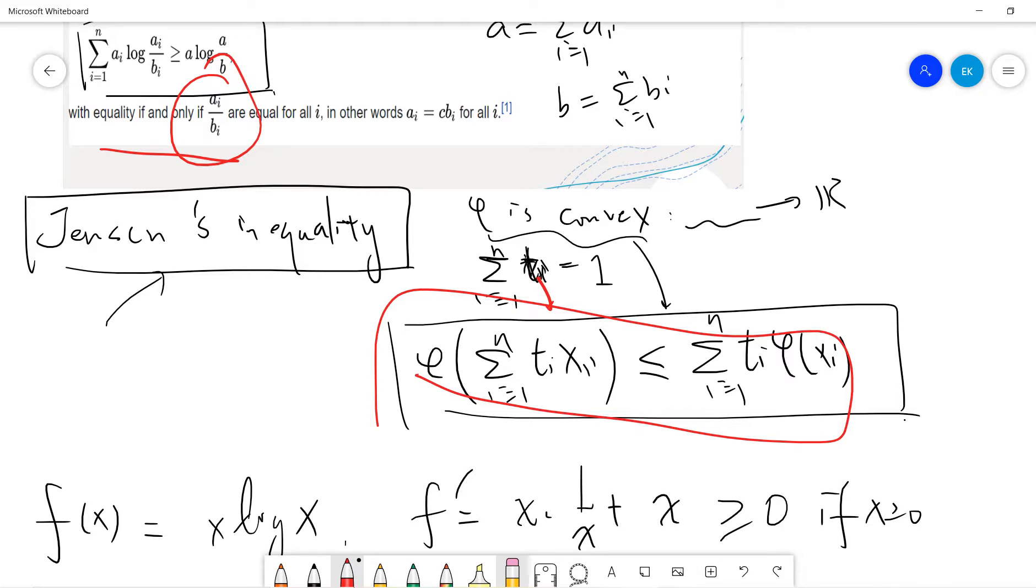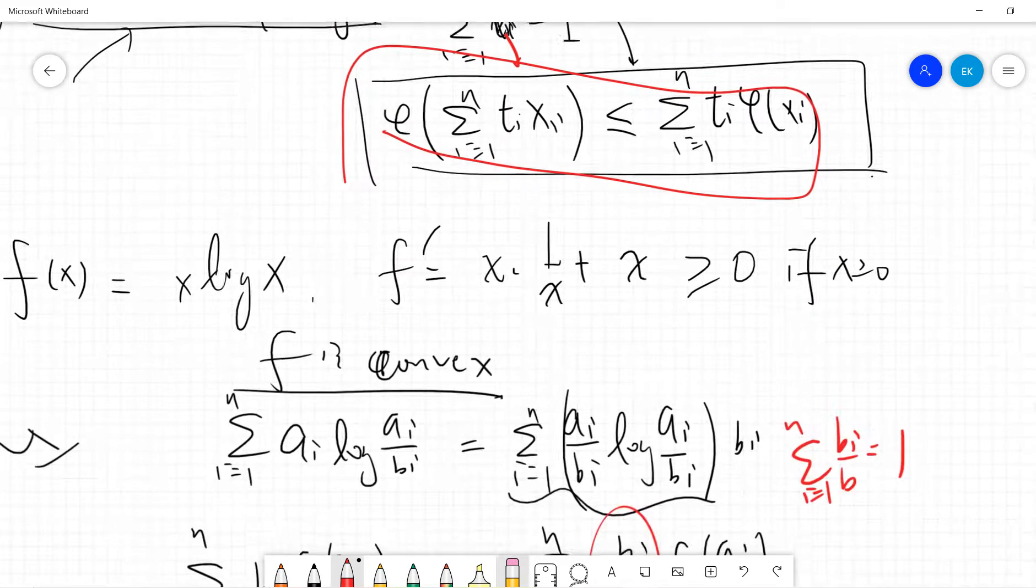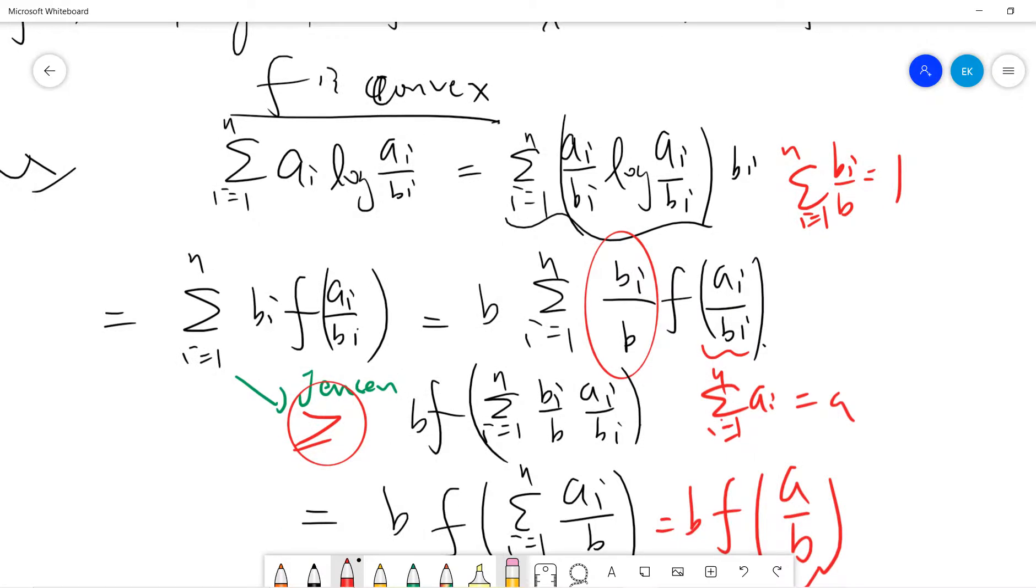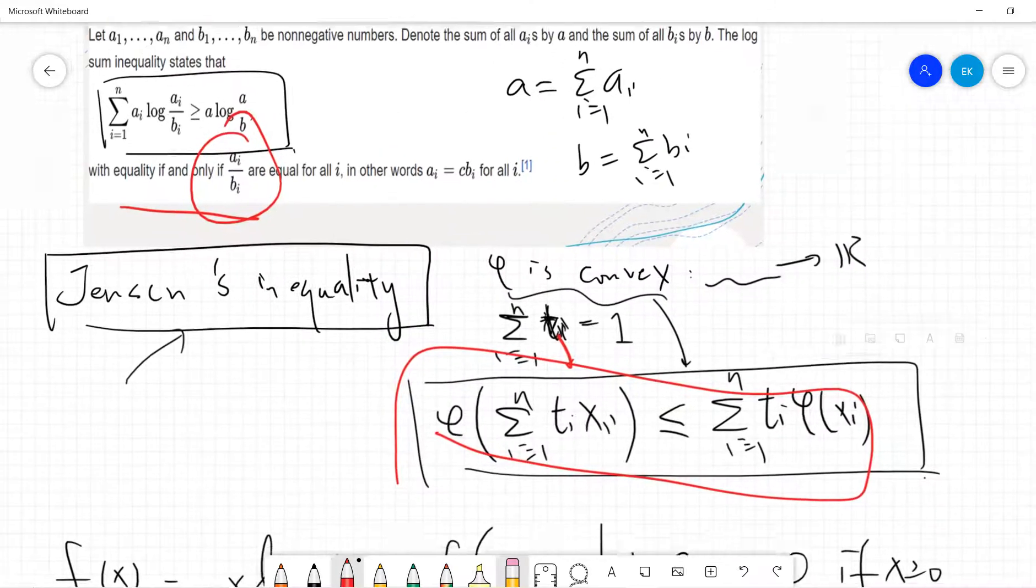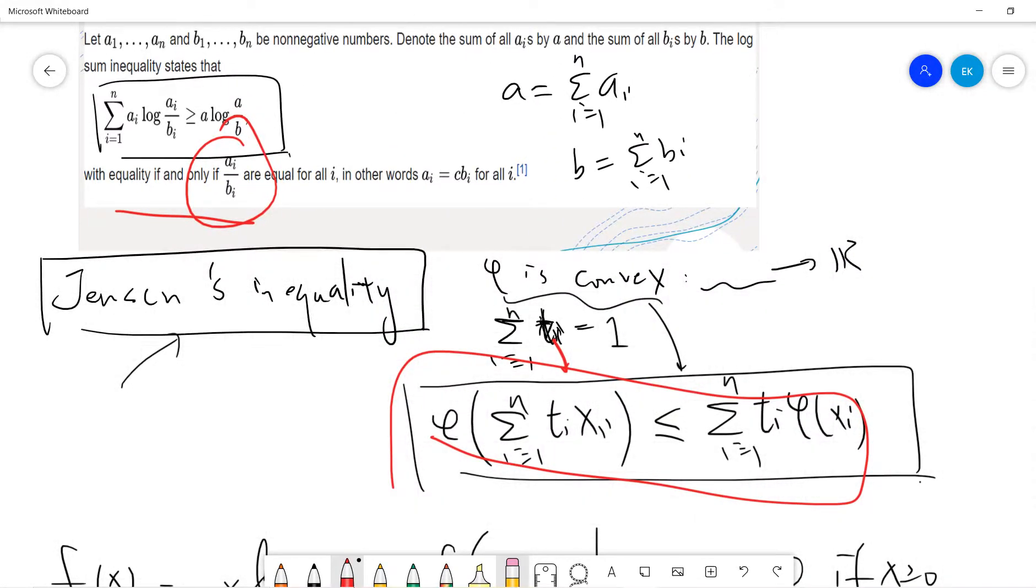And this guy is true if all the xi are the same, right? If all the xi are the same, then this term, this term definitely are the same, okay. Okay, so that's why you can say that this must be the same, right? If all the ai and bi are the same, and then, right,